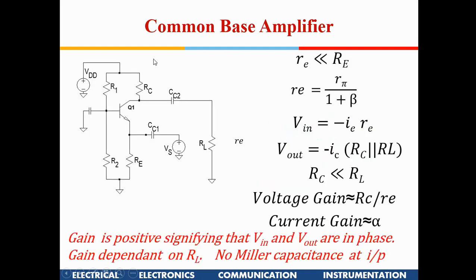Now let's figure out the voltage gain and current gain of a CB amplifier. Applying a voltage at the input, we assume that RE (the input impedance seen into the emitter) is much smaller than the external RE in kilo-ohms. RE equals R-pi divided by (1 + beta), since IB and IE are related by the factor (1 + beta), and similarly RE and R-pi are related by the same factor.